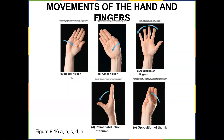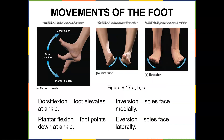Radial flexion and ulnar flexion. You have abduction of the fingers and palmar abduction of the thumb, as well as opposition of the thumb — showing all the movements these joints allow. Movements of the foot include dorsiflexion, which elevates the ankle, and plantarflexion, where the foot points down. Inversion is how you typically sprain your ankle — an inversion sprain is more common than an eversion sprain.